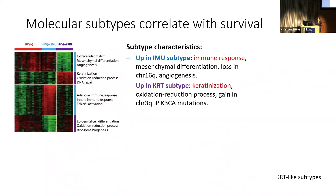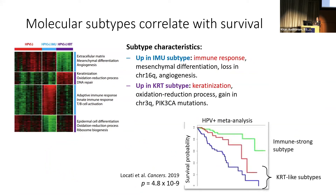For the molecular subtypes, we characterized them in terms of gene expression, copy number variations, mutations, and so forth — and we see they are very clearly separate and easily detectable through clustering using very robust methods. We identified the IMU subtype, named after its immune-strong signature, and then KRT, named after being a highly keratinized tumor type. This is a case where deep learning would have been very much overkill because a simple unsupervised learning technique can handle it. In a meta-analysis, these subtypes were seen to have different prognosis, with the immune-strong subtype having better prognosis than the KRT-like subtypes.